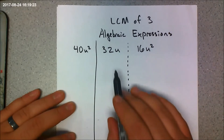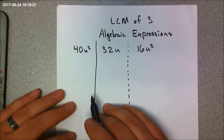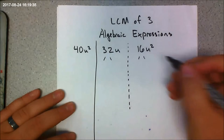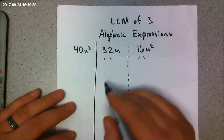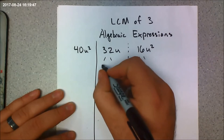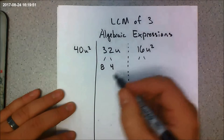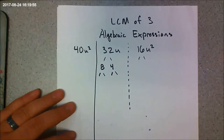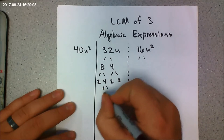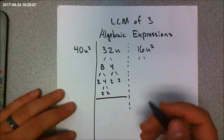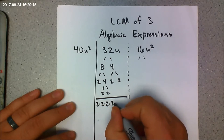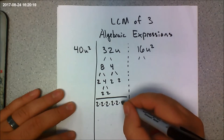I'm going to find the LCM of 32u and 16u squared. I'll start by finding the prime factorization of 32u. I know 8 times 4 is 32, but those aren't prime, so I keep factoring down: 2 times 4, then 2 times 2, and 4 is 2 times 2. That gives a prime factorization of 2 times 2 times 2 times 2 times 2 times u.